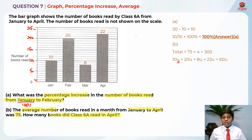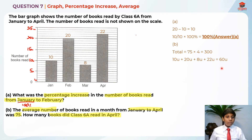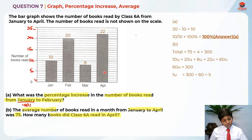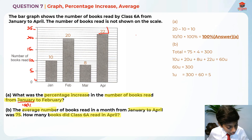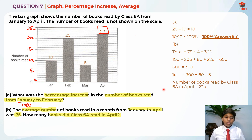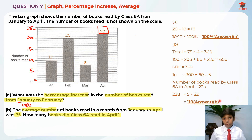Next, I add up all the units: 10 units plus 20 units plus 8 units plus 22 units equals 60 units total for all four months. So 60 units equals 300 books. To find 1 unit: 300 divided by 60 equals 5. Since April is 22 units, we calculate 22 times 5, which gives us 110. So 110 books is the answer for Part B.